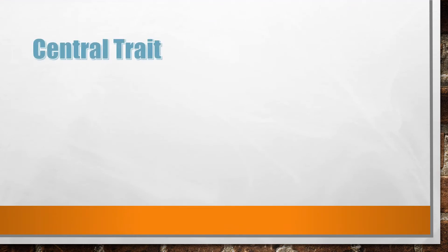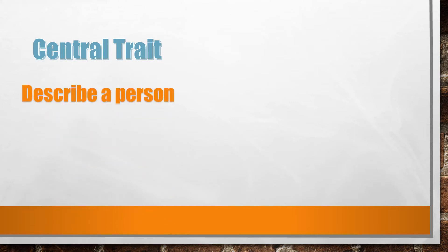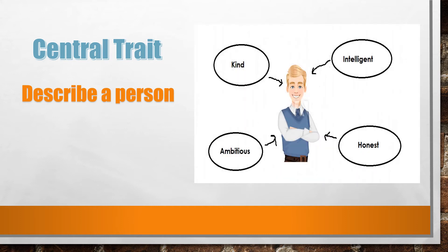Central traits are those characteristics that don't control much of the behaviour but are important. They are the traits that people mention when asked to describe another person. For example, we may say that someone is intelligent, honest, funny, kind, and ambitious.